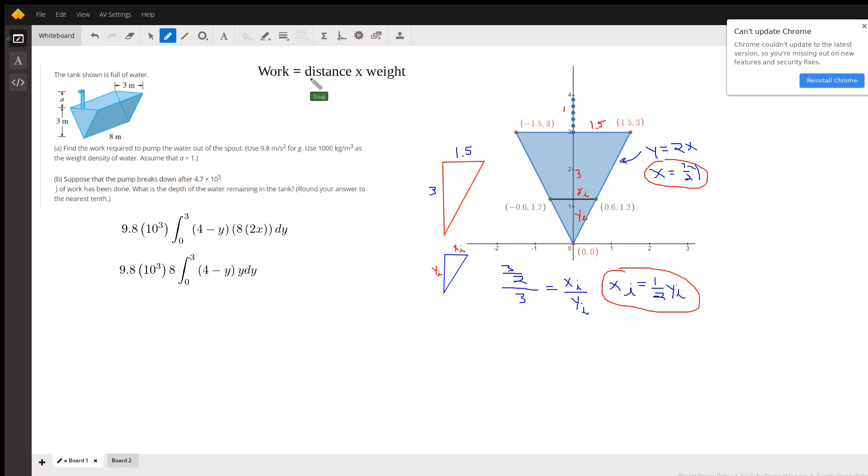Of course, work is the distance times the weight or force required to lift a slice of water from where it is up over the top of the spout. So the distance that this typical slice of water is moved is 4 minus this distance right here, which I'm calling y. So I put this on a coordinate axis, 0, 0 is the vertex of the triangle.